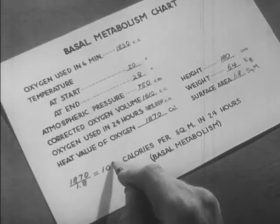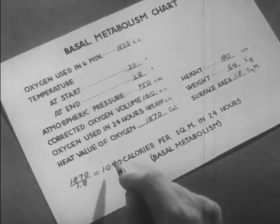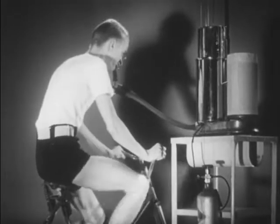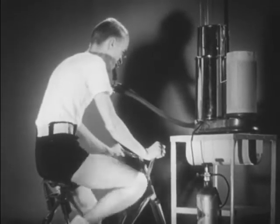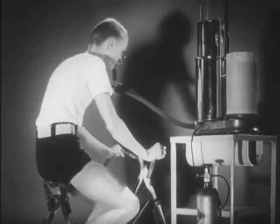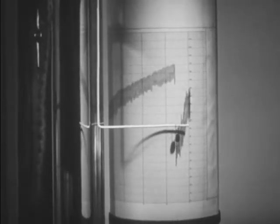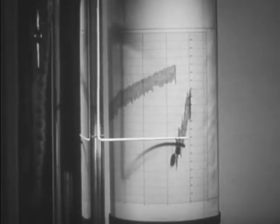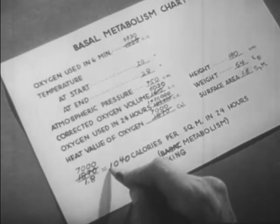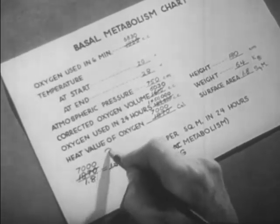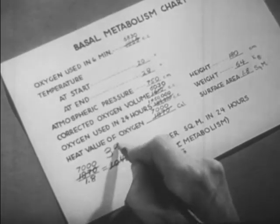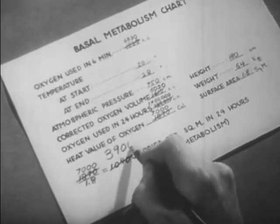The same man is now doing work against a brake. The stylus drops much faster than before, indicating a more rapid consumption of oxygen. Performing the same calculations as before, we now find that the metabolic rate is almost four times as great as when he was at rest.